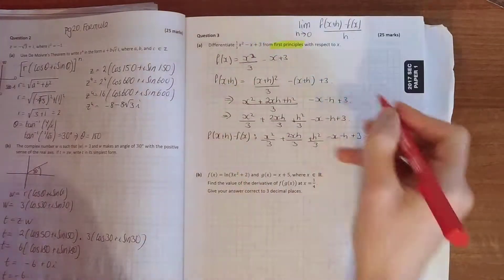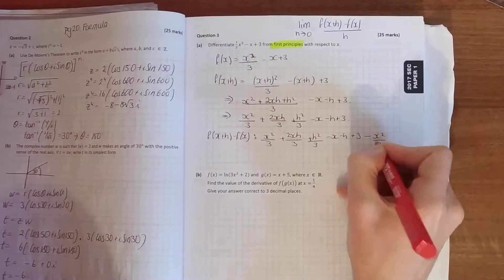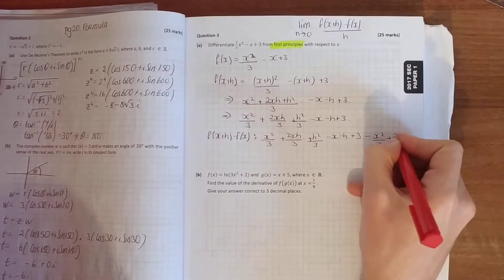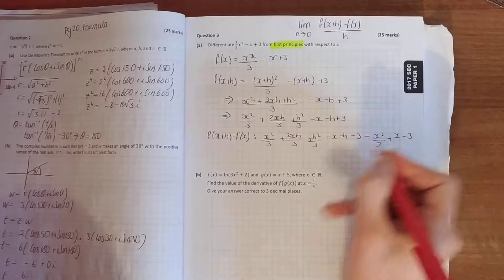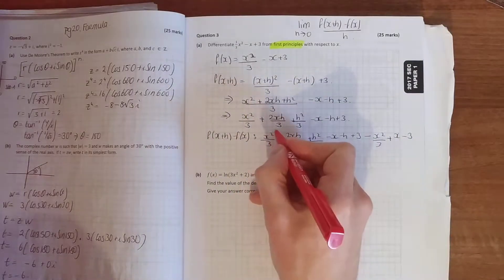Minus all of these terms here. So, minus x squared over 3. Minus minus x is plus x. Minus plus 3 is minus 3. And as you can see, they go.